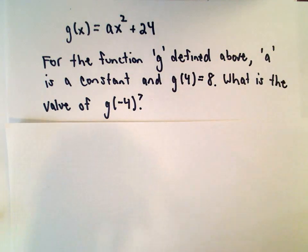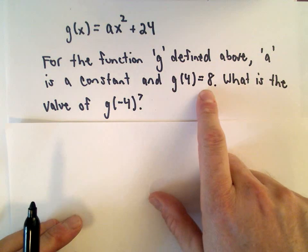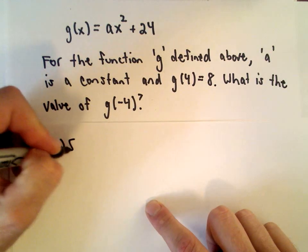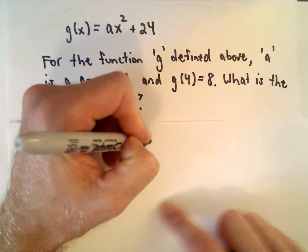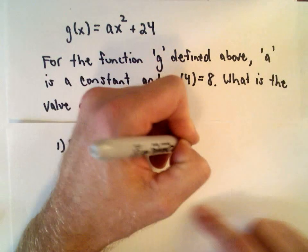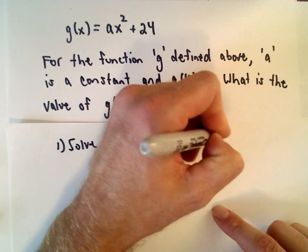But we can use this information, g(4) equals 8, to determine a. So the first thing we'll do is solve for a using that information that g(4) equals 8.